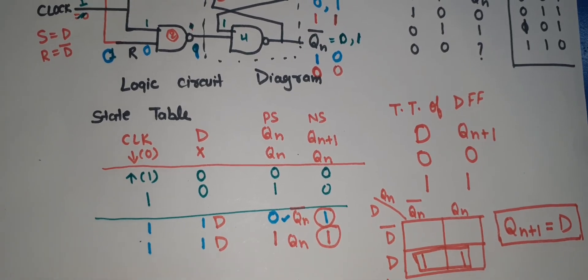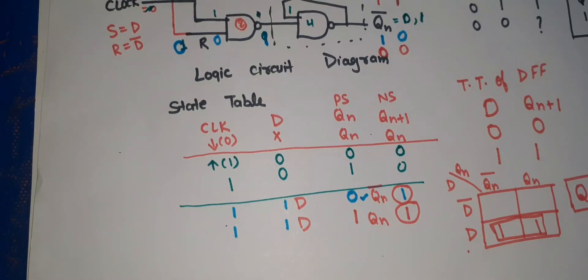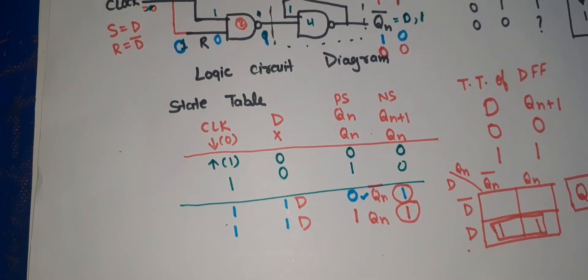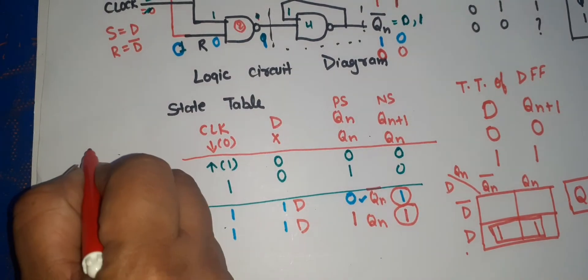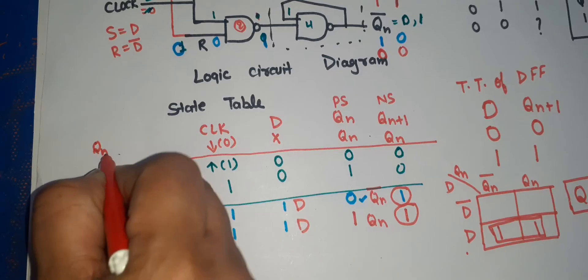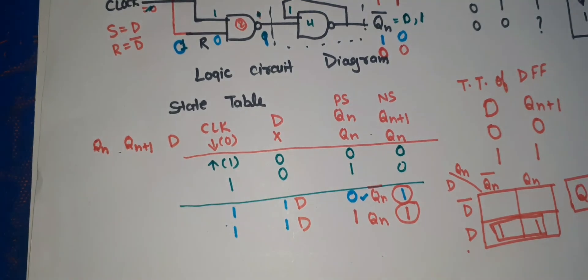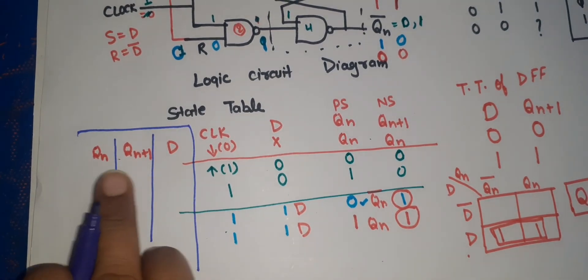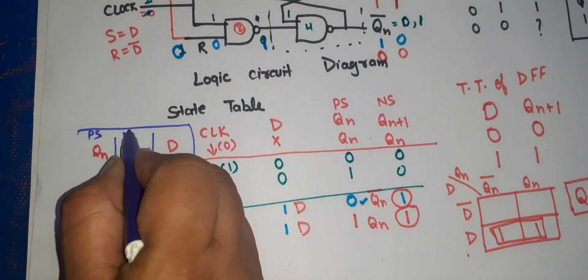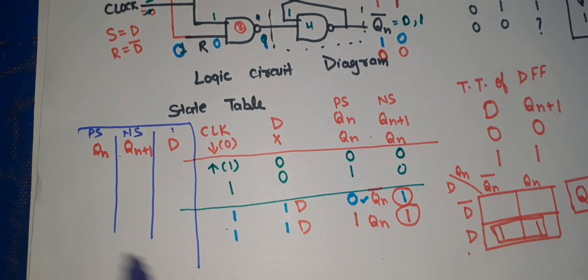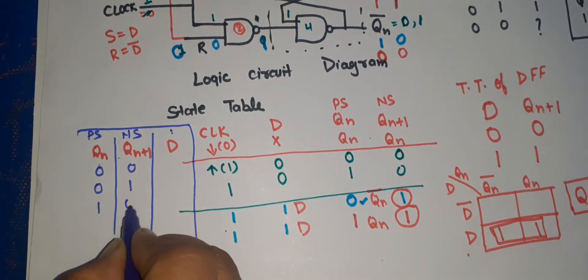Now what remains is the excitation table. We will draw the excitation table using the characteristic table and state table. In the excitation table, the present state Qn and next state Qn+1 will be inputs, and D will be the output. There are two inputs so there are four possible combinations.